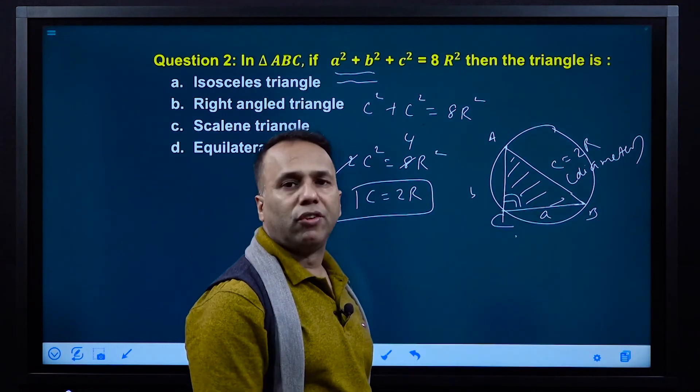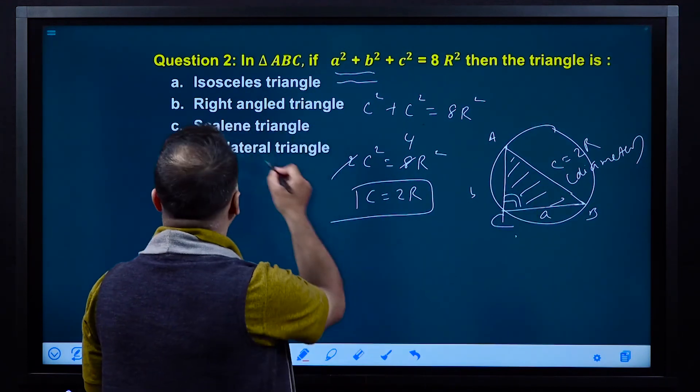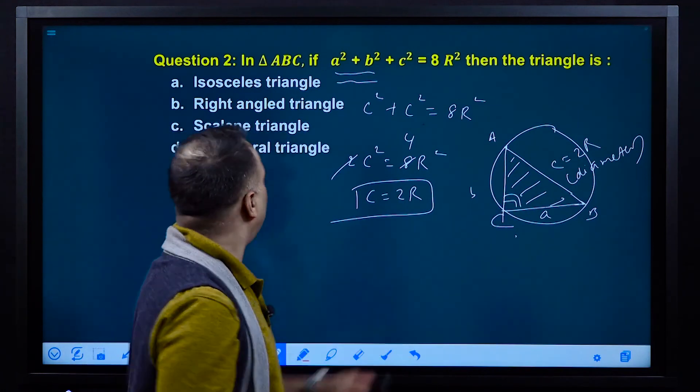The angle is 90 degrees, so the triangle is 90 degrees right-angled.